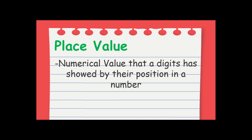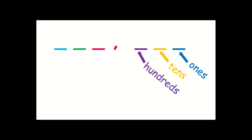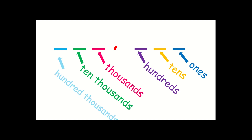Let's go deeper into place value. We have positions here. The first position from the right is for the ones place. The second one from the right is the tens place. The third from the right is hundreds. The fourth from the right is thousands. Next is ten thousands, and the sixth from the right is hundred thousands. These are the place values of a number.